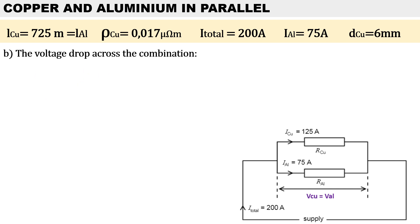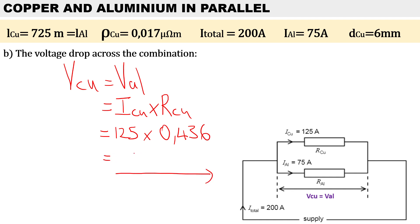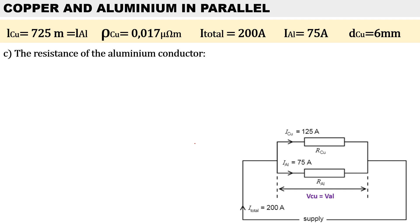For part b, calculate the volt drop across this combination. Voltage stays the same in parallel, so the voltage for copper will be the same as the voltage for aluminium. The current through the copper cable is 125 amps and the resistance for copper is 0.436 ohms. Therefore the volt drop across both conductors is 54.5 volts.